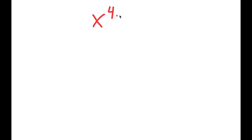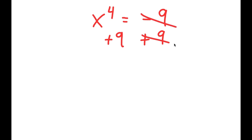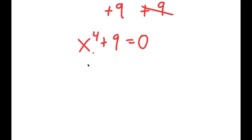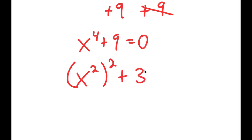Alright, so for this problem I'm going to be solving the equation x to the power of 4 is equal to negative 9. What I'm first going to do is add 9 on both sides. These two cancel out and I get x to the power of 4 plus 9 is equal to 0. Now from here, I can rewrite x to the power of 4 as x squared to the power of 2, and I can rewrite 9 as 3 squared.